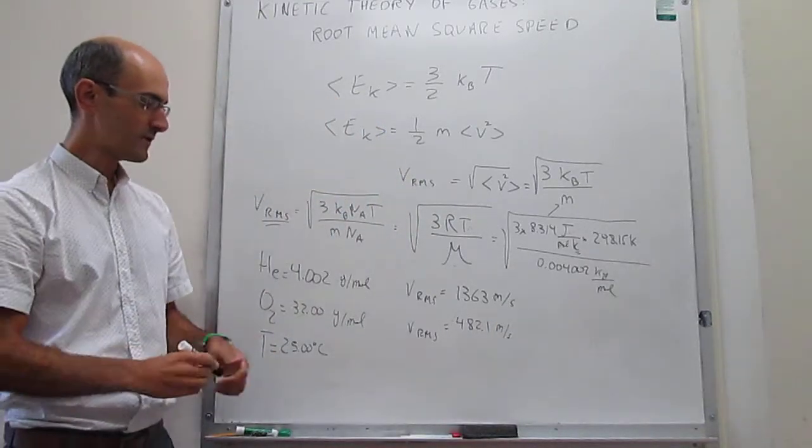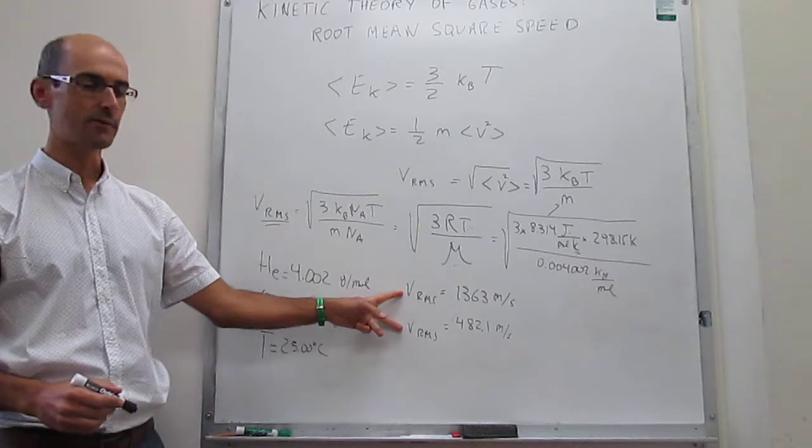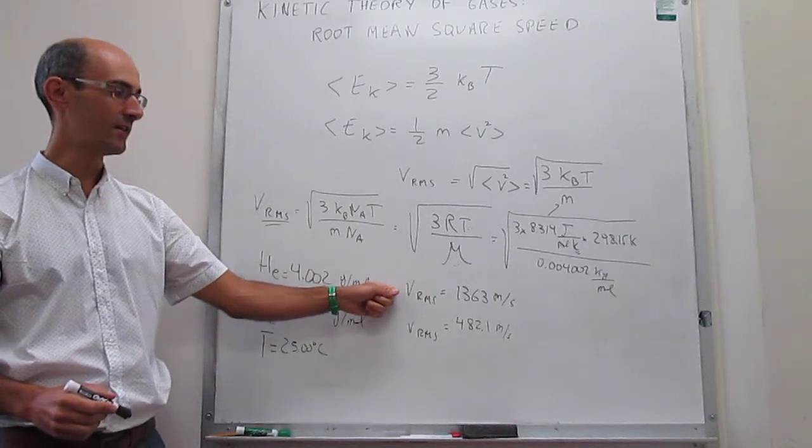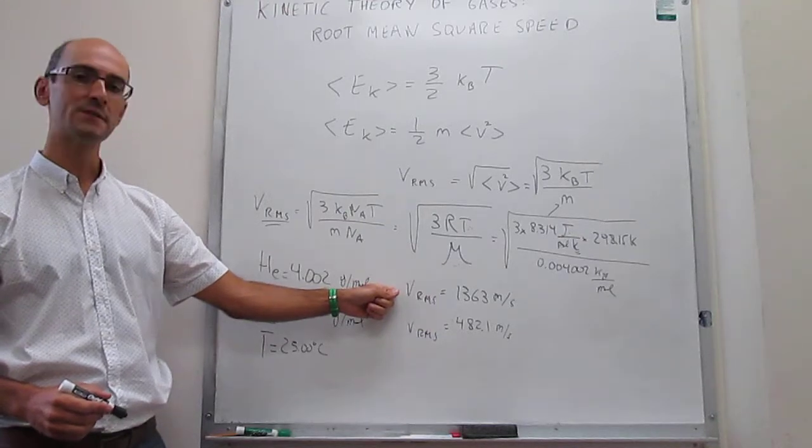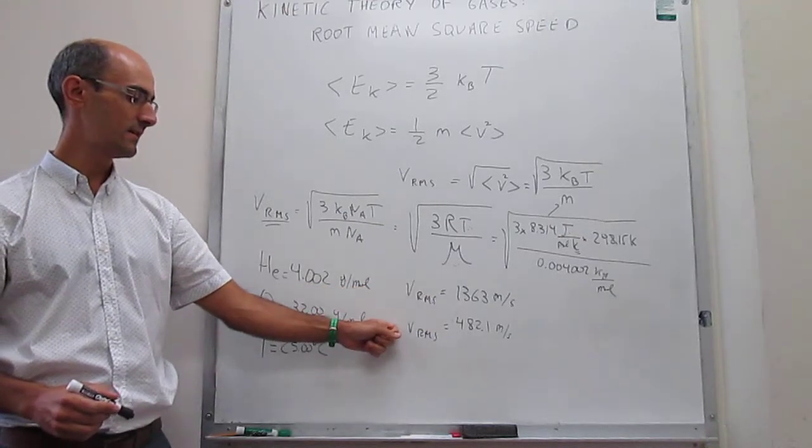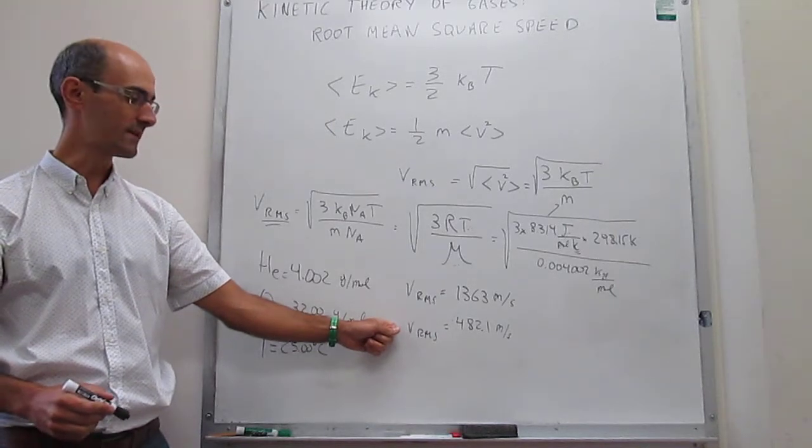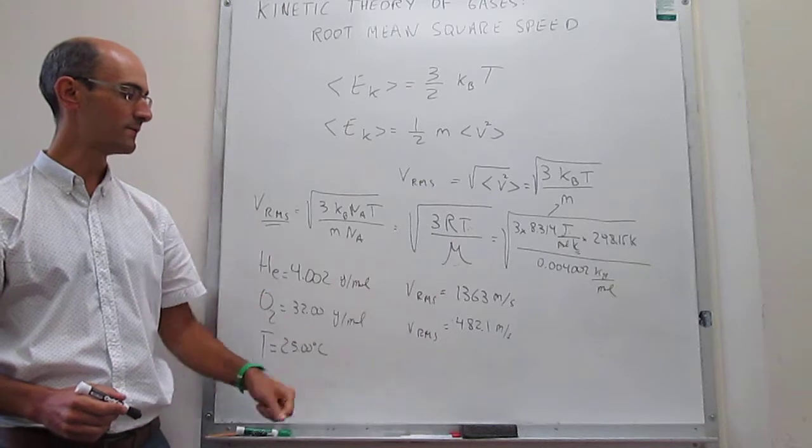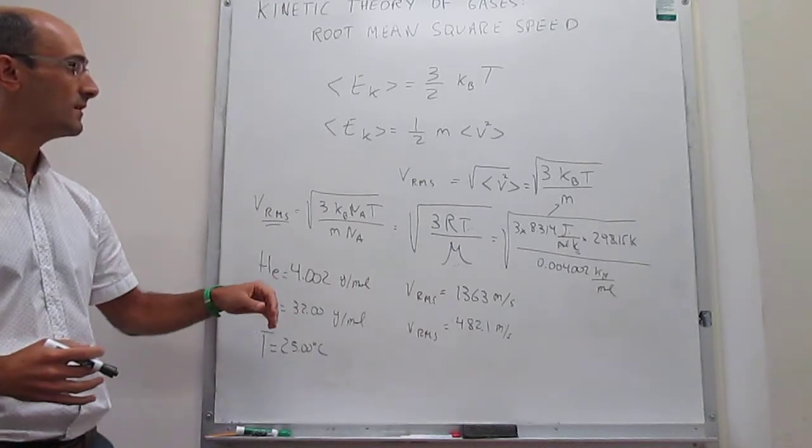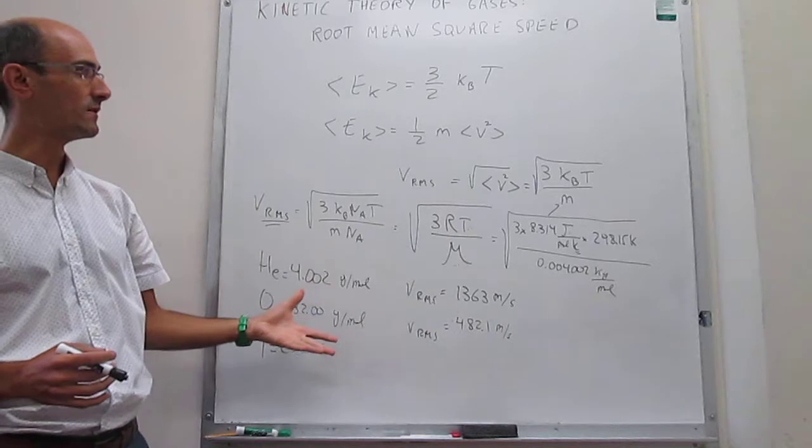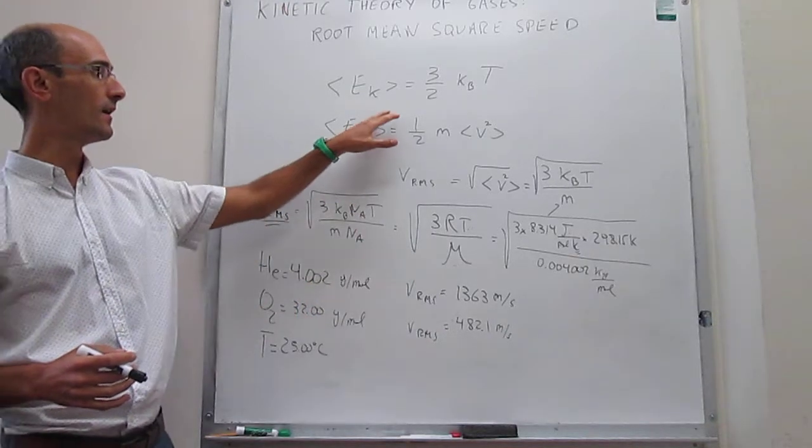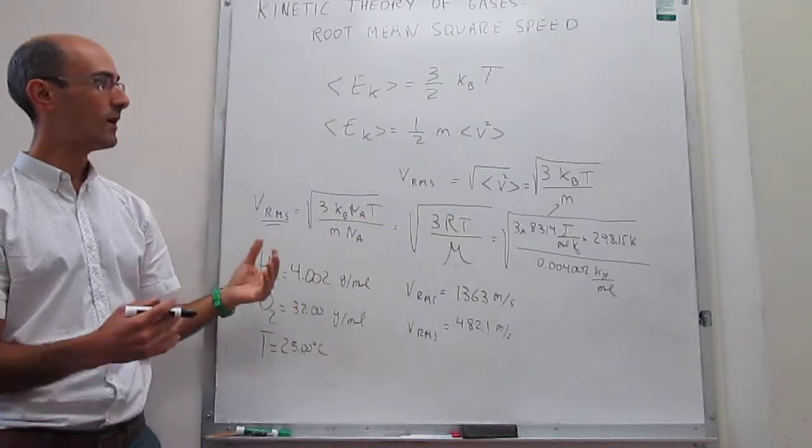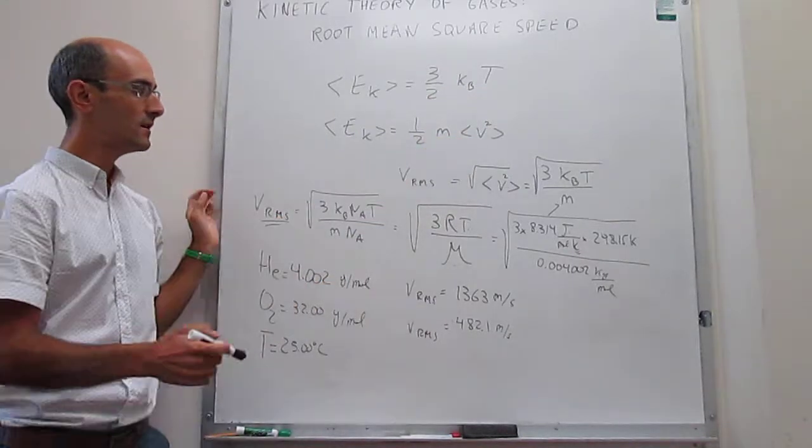So what do we learn here? We learn something interesting, something expected. The lighter atom, helium, moves on average faster, and that makes perfect sense. And then the heavier molecule, in this case, moves a little bit slower. This has to be because in the end the kinetic energy actually does not depend on the mass. It doesn't depend on the nature of the particle, only on the temperature. So we now understand what the balance is. For helium, this mass is actually much smaller than for oxygen, but the velocity is much larger.